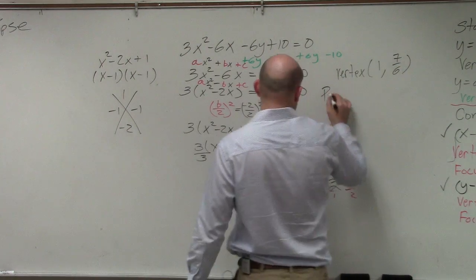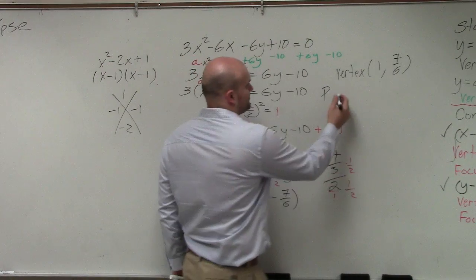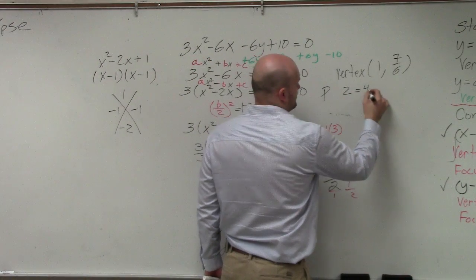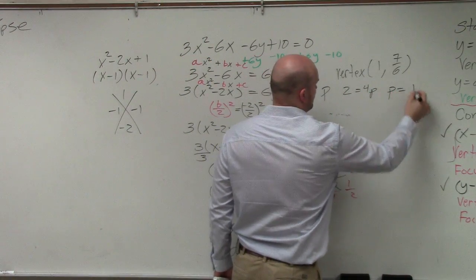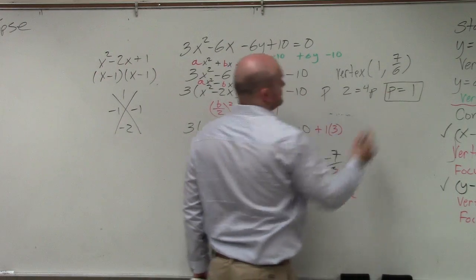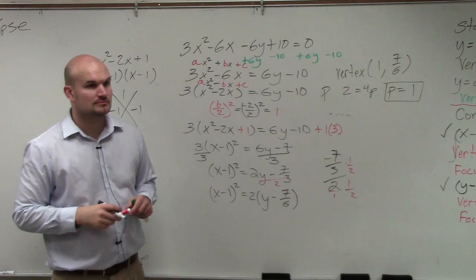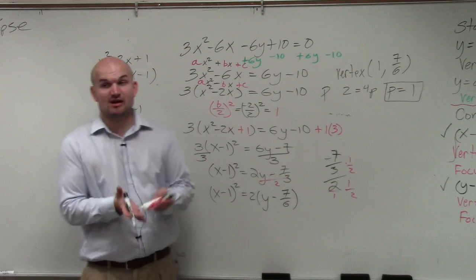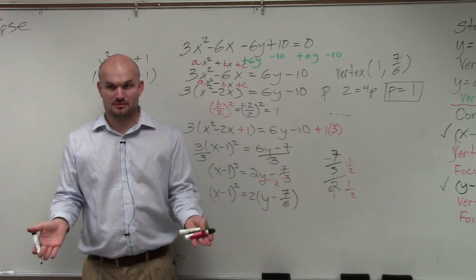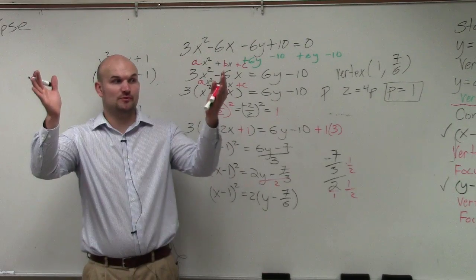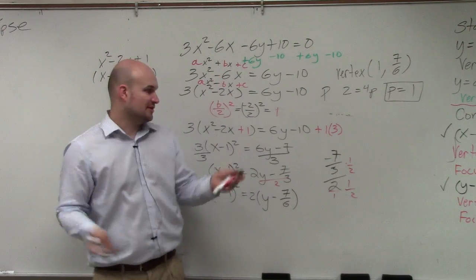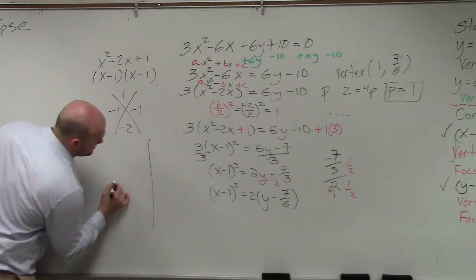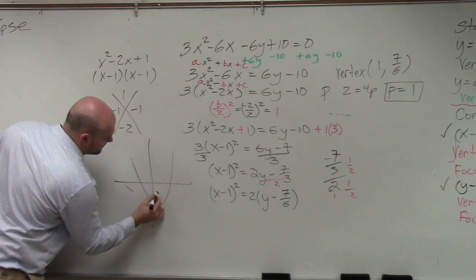My p is going to be 2 = 4p, so p = 1/2. Do you guys agree? Now we look at this. x is squared, so my graph opens up or down, correct? p is positive, so that means my graph opens up, correct? So therefore my graph looks something like this.